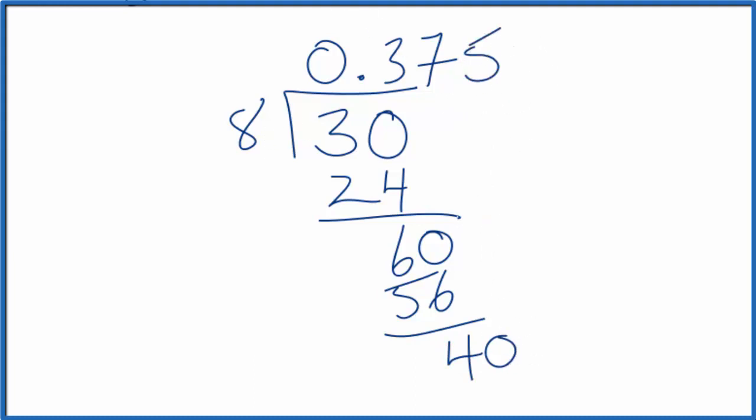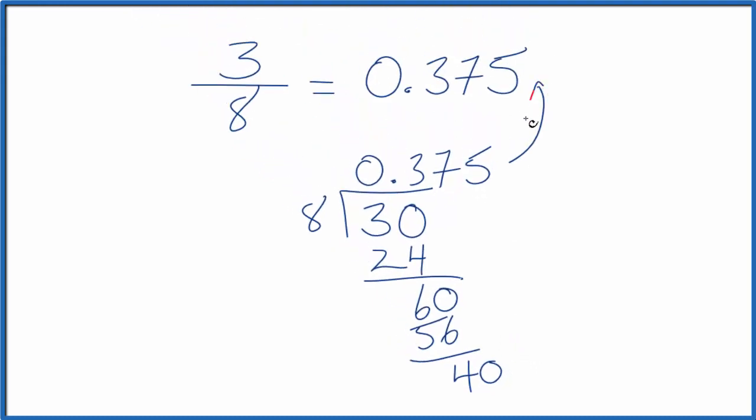So when we express the fraction 3 eighths as a decimal, we get 0.375, just like we found on our calculator. You could also check this by taking 0.375, the decimal, multiplying that by the denominator, and you should end up with the numerator.